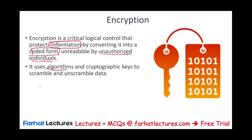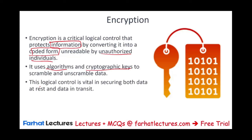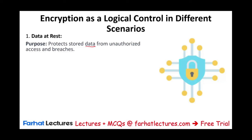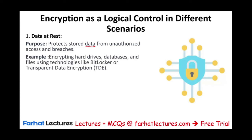This logical control is vital in securing both data at rest and data in transit. Data at rest means the data is not moving — it's sitting somewhere in your database or data warehouse. Encryption protects stored data from unauthorized access and breaches. For example, encrypting hard drives, databases, and files using technologies like BitLocker or Transparent Data Encryption. Even if someone accesses the database, they cannot read it after gaining access — they can't do anything with encrypted data.